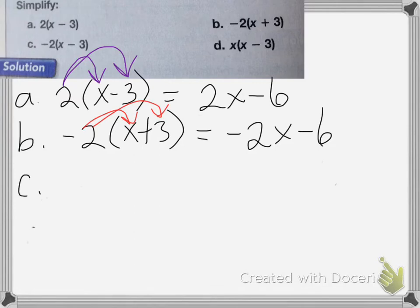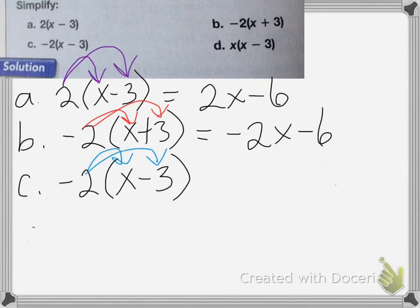On C, it's negative 2 times (x minus 3). We distribute that negative 2 again, so we get negative 2x, and then negative 2 times negative 3 equals positive 6, giving us negative 2x plus 6.